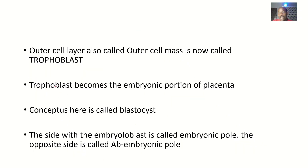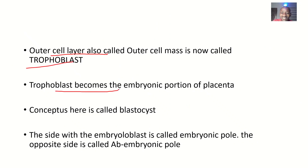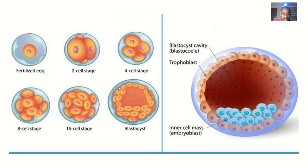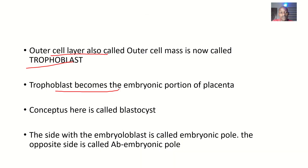The outer layer is also called the outer cell mass, and the inner cell layer is called the embryoblasts. The outer cell layer is called the trophoblasts. The trophoblasts become the embryonic portion of the placenta. The conceptus at this stage is called the blastocyst.